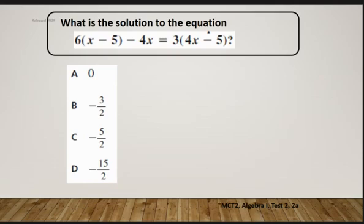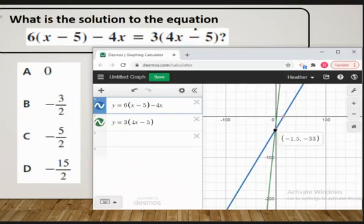So what you want to do is go to Desmos, and this is what I meant by typing in the first half of the equation. So you're going to type in the first half using Y equals 6(x - 5) - 4x, and then you're going to go to the second box and type in Y equals, and then your second half of your equation, 3(4x - 5).